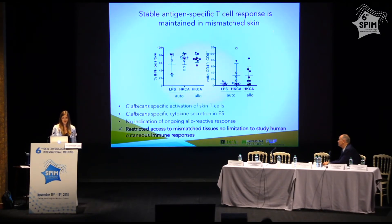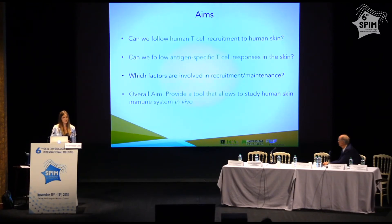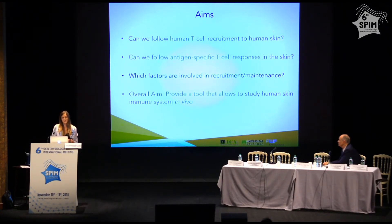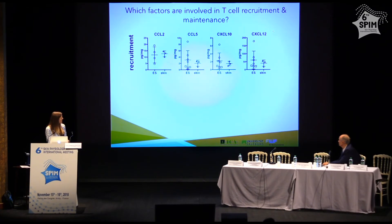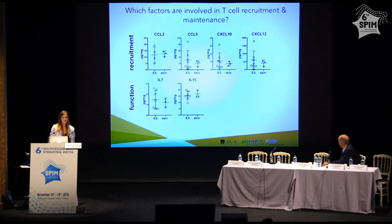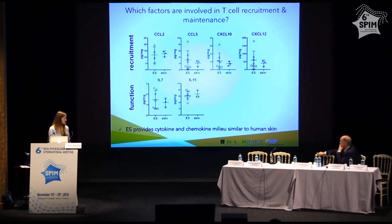The skin itself produces many factors, so we tried to find out which factors contribute to T cell recruitment and function. We isolated engineered skin grafts and human skin and performed a Luminex analysis — essentially 45 ELISAs simultaneously — examining soluble factors secreted within the tissue. We found that factors important for immune cell recruitment were secreted at equal levels in both engineered and human skin. Critically, cytokines like IL-7 and IL-15, which play a crucial role in T cell function and maintenance, were also secreted at equal levels in both tissues. This suggests the engineered skin provides a similar milieu to human skin, supporting cutaneous immune responses in vivo.